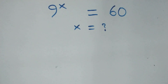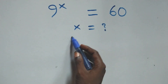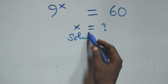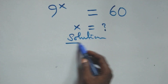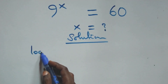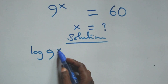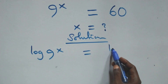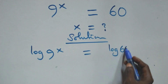Hello, you're welcome. How to solve this nice exponential equation. What we have here: we take the log on both sides, that is we have log 9 raised to power x equals log 60.